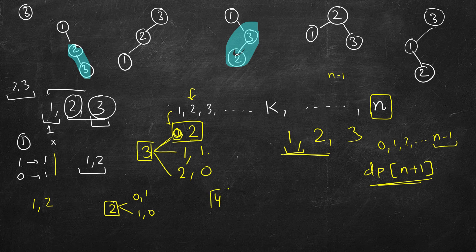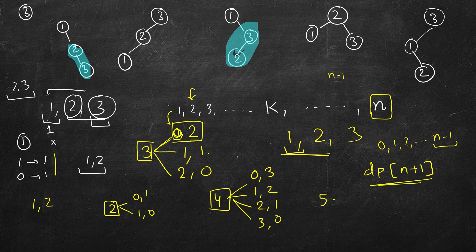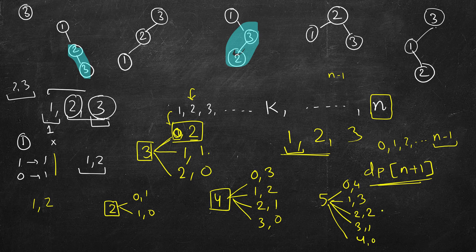Let's write down the pairs for four: zero-three, one-two, two-one, three-zero — sum always equals three. For five: zero-four, one-three, two-two, three-one, four-zero — sum always equals four. So if we know the solutions from zero through four, we can calculate the value for five.